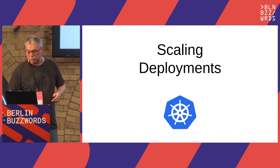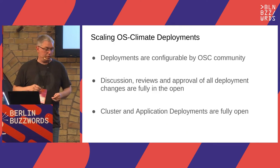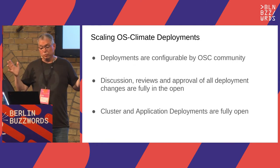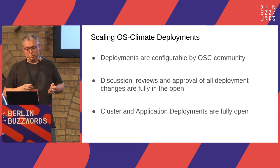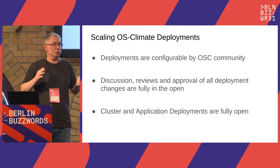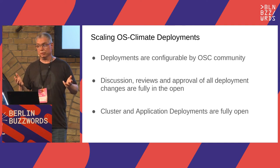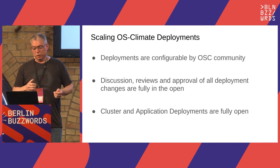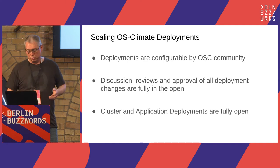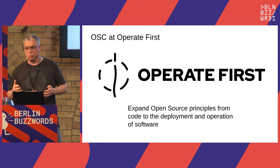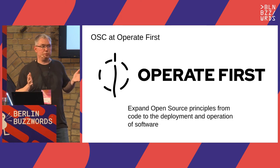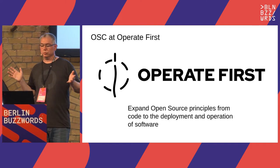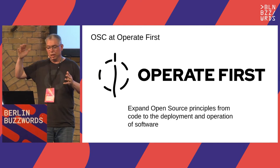What about deployments? When I talk about scaling deployments here, I'm really talking about scaling deployments in a community build-out sense. We want the deployments to actually be configurable by the community members themselves. We want discussion, reviews, and approval of any changes to be fully in the open and auditable — going back to things like greenwashing. We want the actual static deployment information to be publicly viewable. We're doing that by working with another project called Operate First. Operate First's goal is to expand open source principles from just code to the deployment and operation of running software.